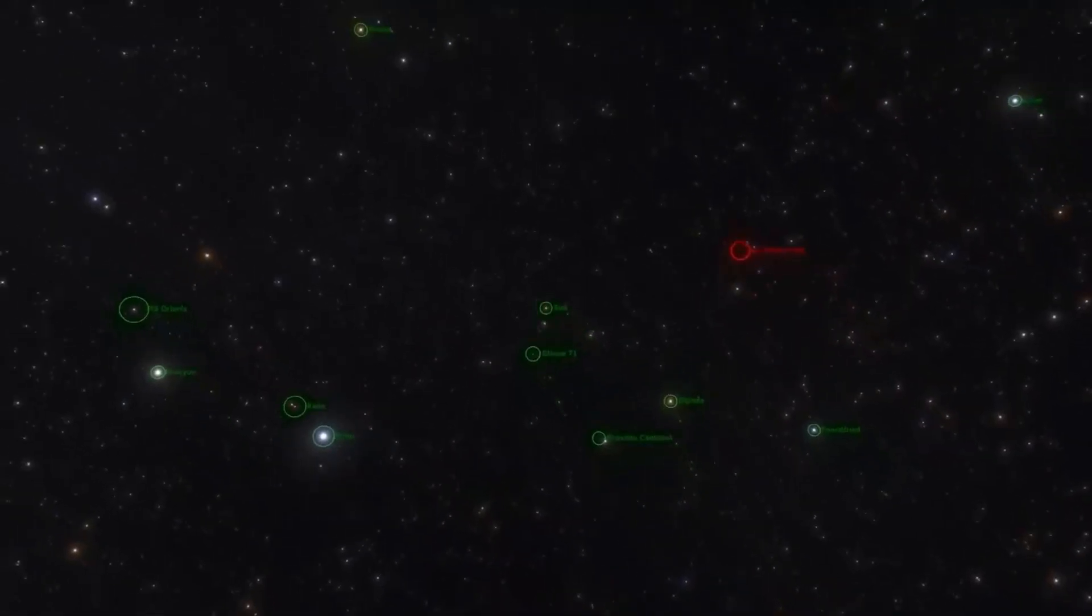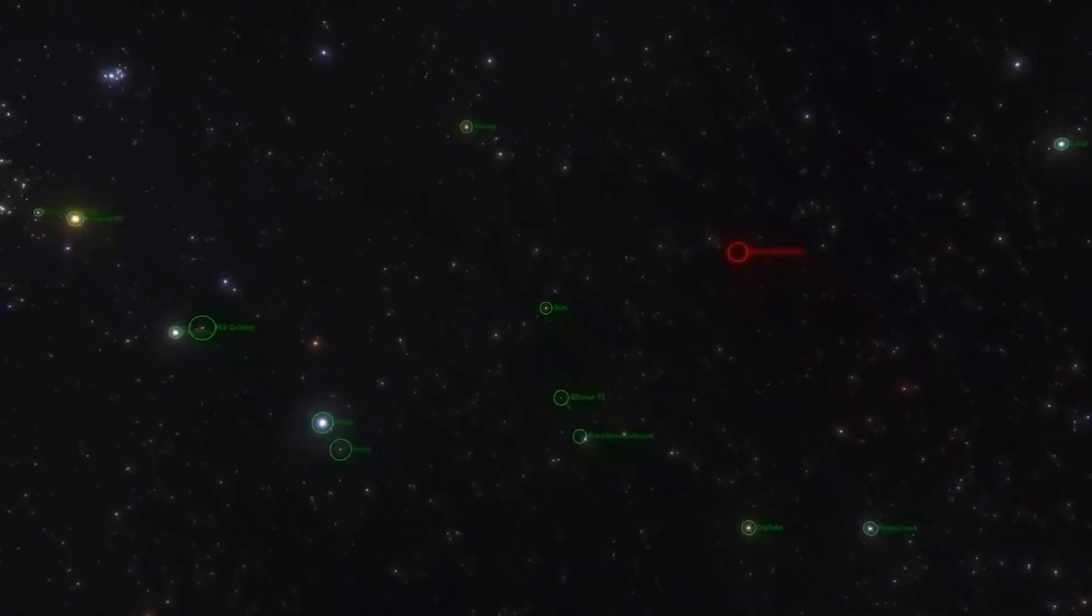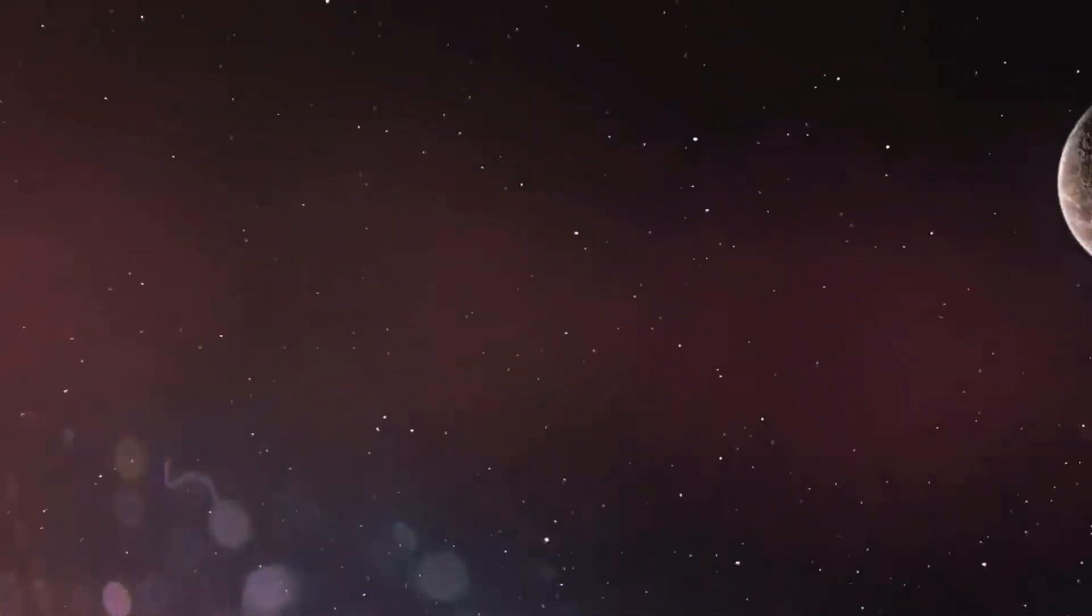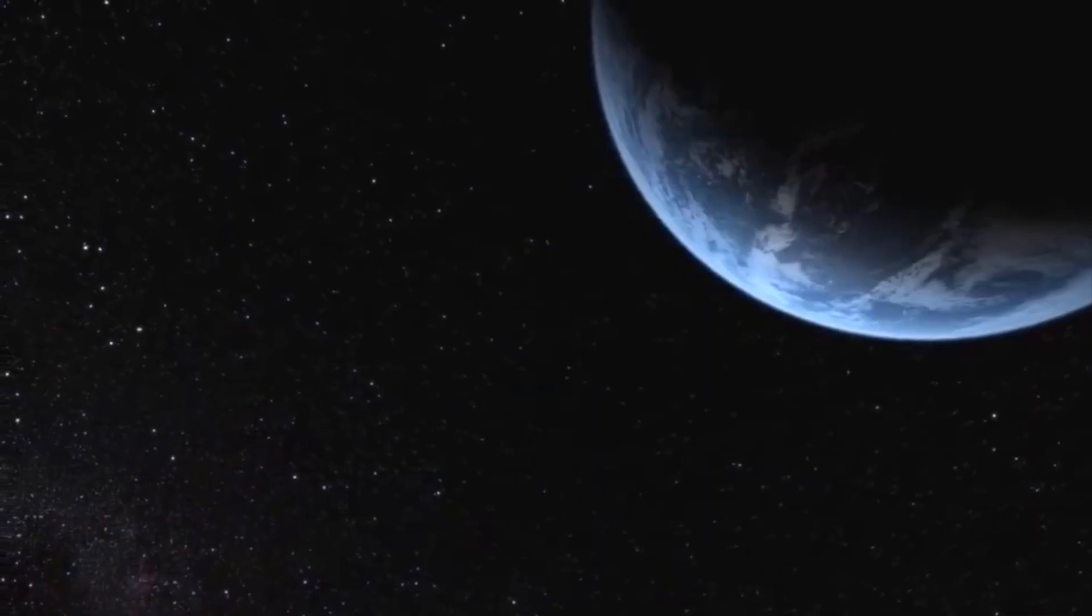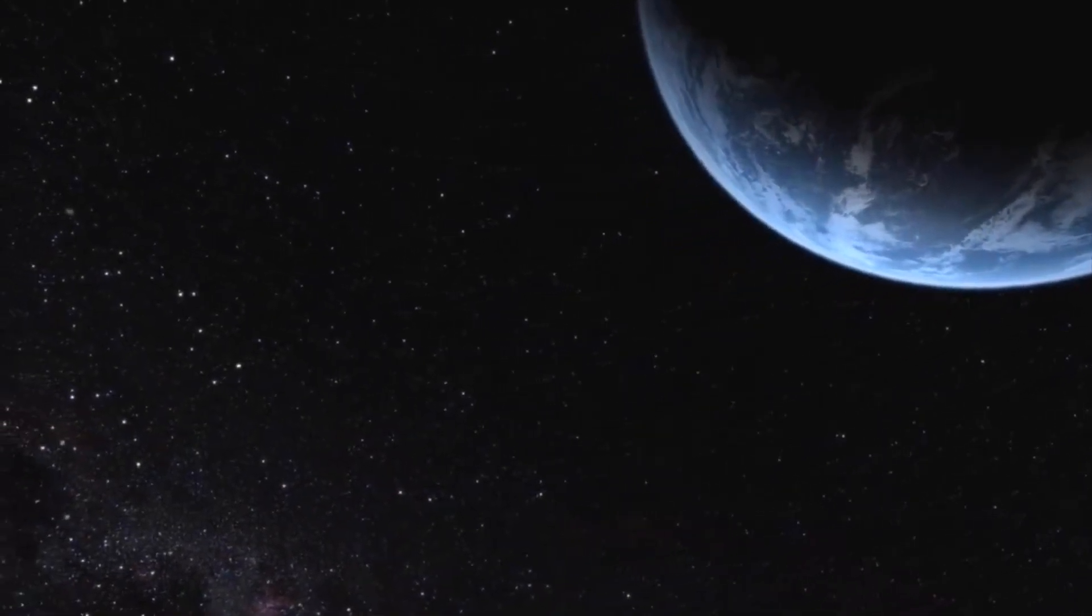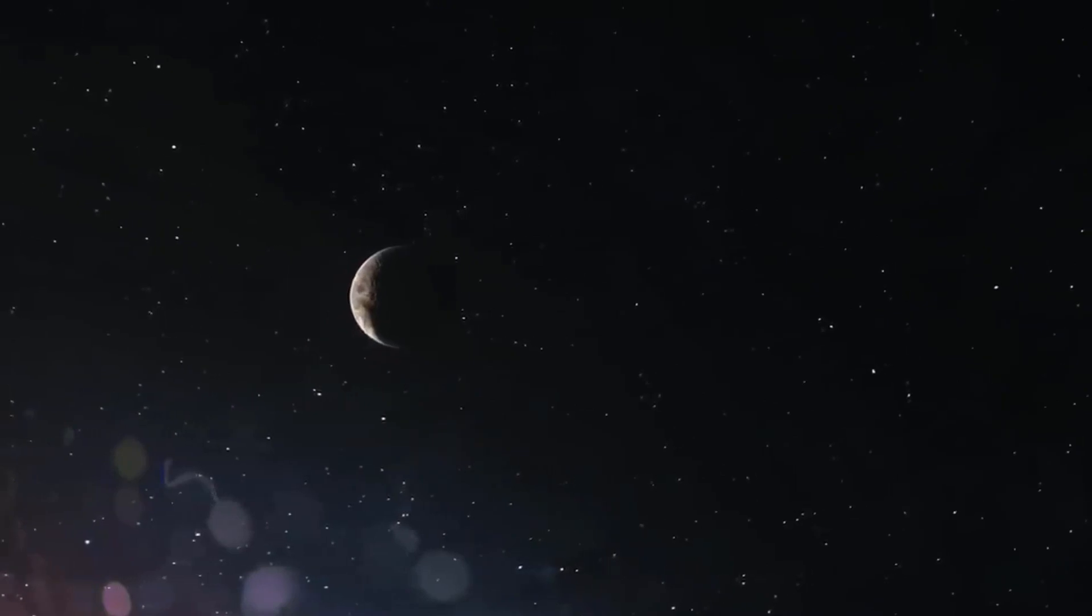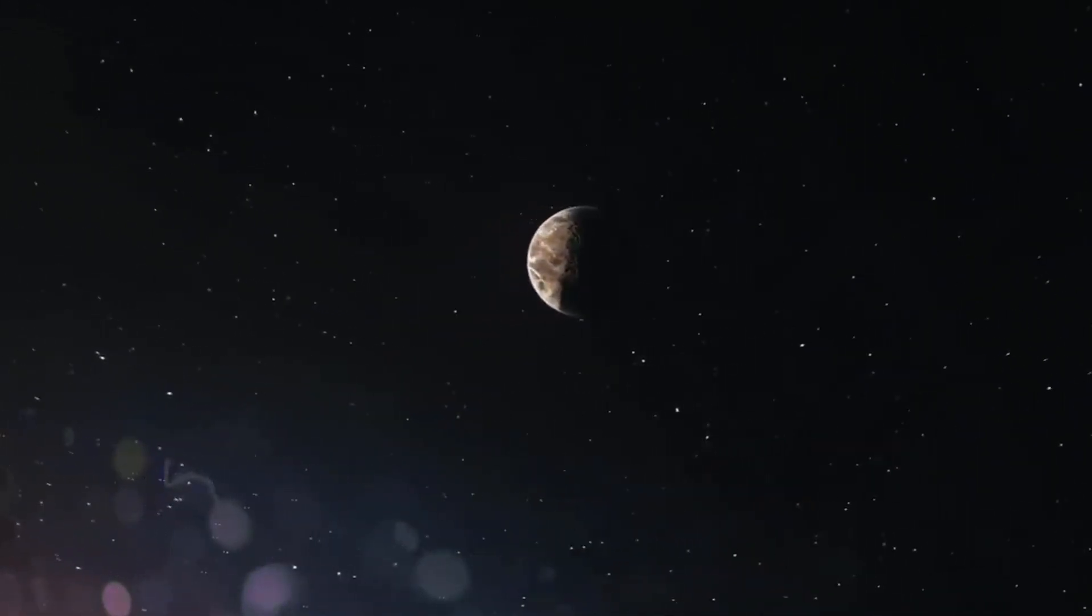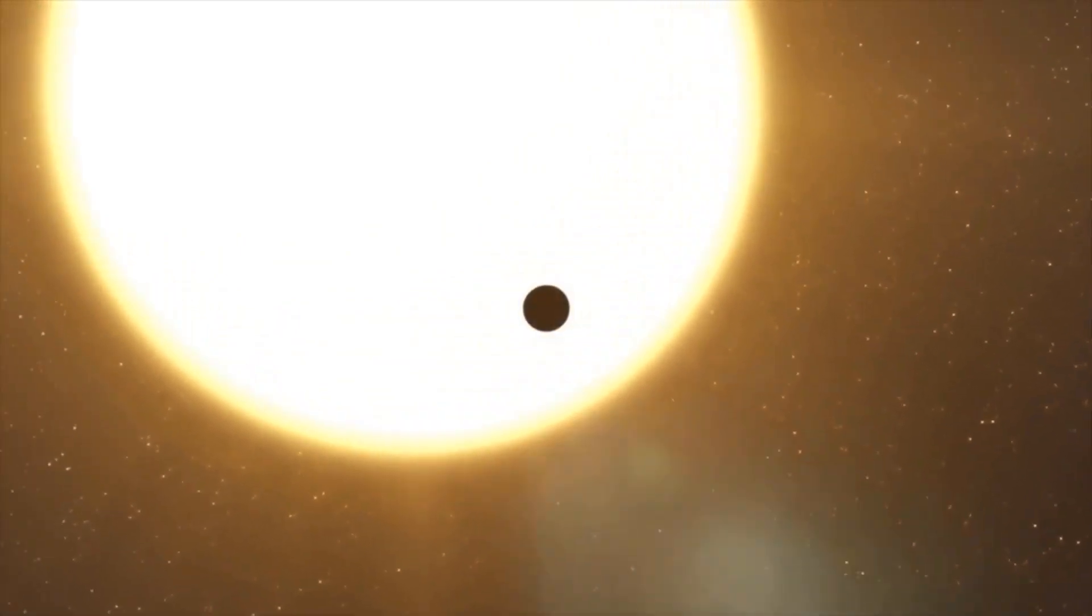Scientists even speculate that some of these worlds may exist in the star's habitable zone. This is a region where the planets are not too far to have a frozen surface, yet not too close to the object to be arid. This means that some of these planets may have liquid water which flows freely on their surfaces. Epsilon Eridani has been a subject of constant intrigue over the years and has had a place in the lore of many science fiction television shows.